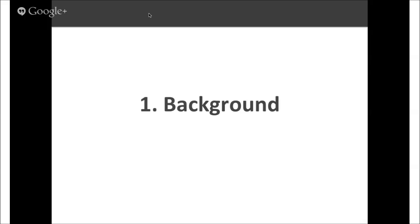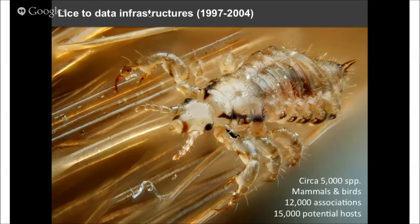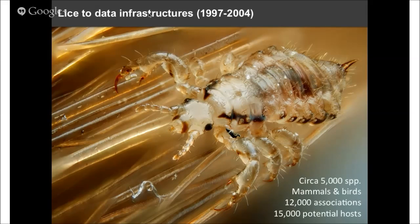So first, some background. I want to start by saying how I moved from being a taxonomist and a systematist to someone interested in building digital infrastructures. My career in science started by working on parasitic lice. What most people think of when they think about lice is the human head louse. However, there are in fact about 5,000 species of lice and about 12,000 different associations between lice and the mammals and the birds on which they live, out of potentially about 15,000 host species.